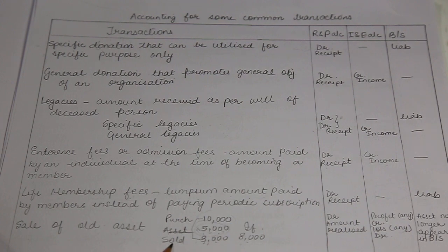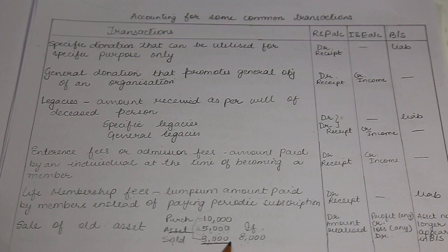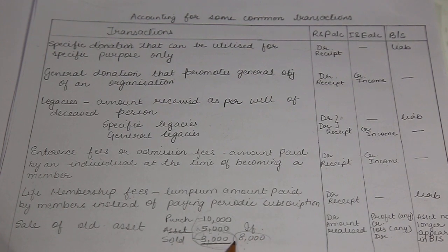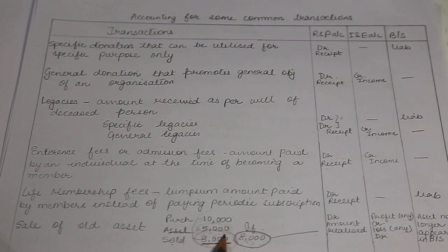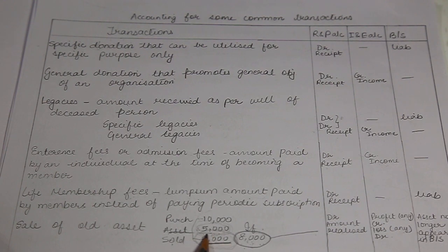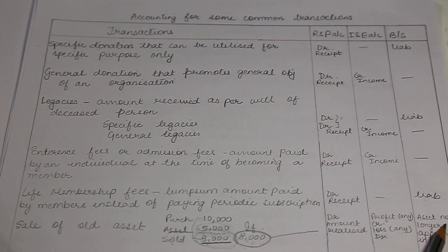From the balance sheet, if the asset was 5,000 rupees in the previous balance sheet, it will no longer appear because the asset has been sold and is no longer with the not-for-profit organization. To summarize: in the receipts and payments account, record the actual sale amount received. Only the profit or loss goes to income and expenditure account — if sold at 8,000 against book value of 5,000, 3,000 profit is credited as income; if sold at 3,000, 2,000 loss is debited as expenditure. The asset will not appear in the balance sheet anymore.